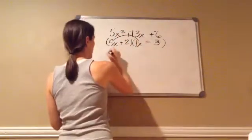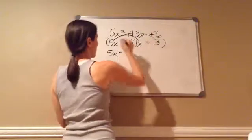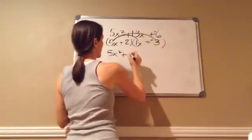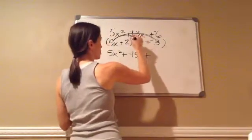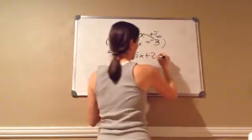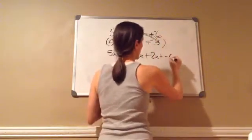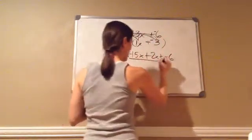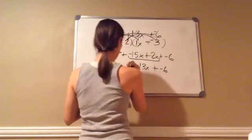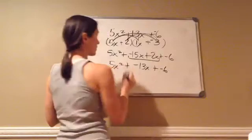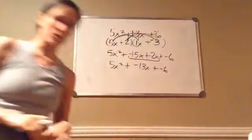5x times 1x is 5x squared. Let me make this plus negative. 5x times negative 3 becomes negative 15x plus. Now, let's do this 2. 2 times 1x is 2x plus. And then, let's do this 2 times negative 3 is negative 6. And then, that does equal negative 13x plus negative 6 plus 5x squared. And, it lines up perfectly. So, that is how you do Lesson 109.